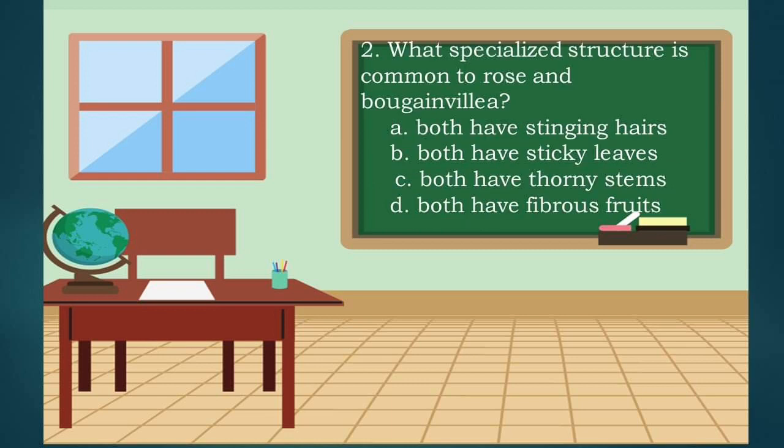Question 2: What specialized structure is common to rose and bougainvillea? A. Both have stinging hairs, B. Both have sticky leaves, C. Both have thorny stems, D. Both have fibrous fruits. If your answer is C, then you are correct.